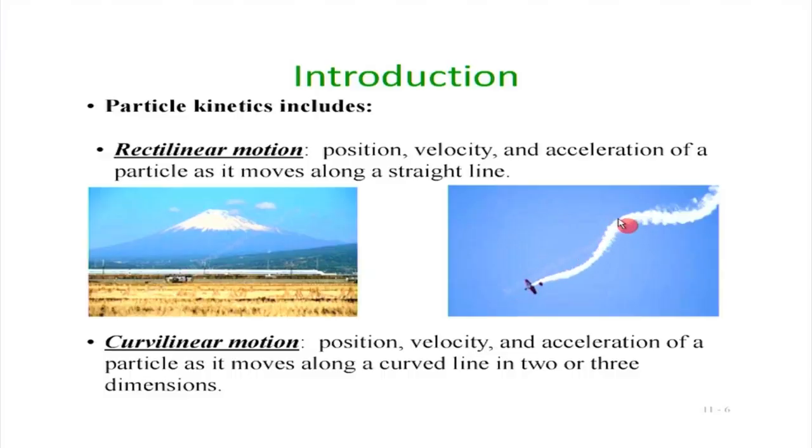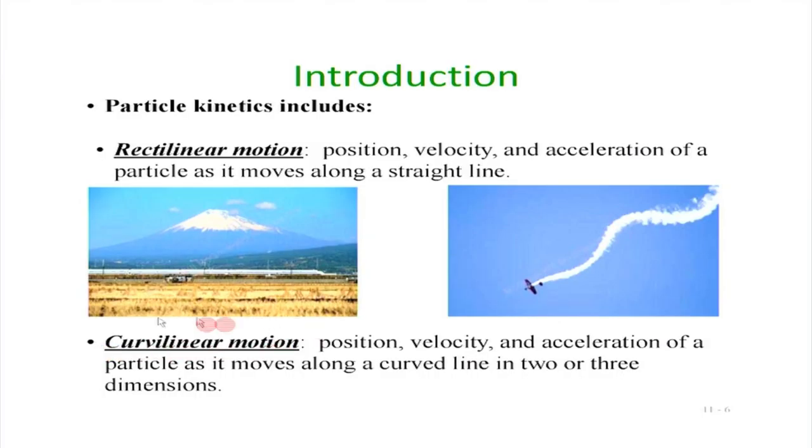If you are walking on flat ground and taking turns, running on a track, that motion is curvilinear but in a 2D plane. On the other hand, if you are riding a car on a bumpy road that goes up and down, moves sideways, takes curves — especially travelling in ghats — that is curvilinear motion in 3 dimensions. In this course, keeping in mind limited time and typical syllabus coverage, we will deal with curvilinear motion only in a plane. So rectilinear motion in a line and curvilinear motion in a plane is what we will discuss.